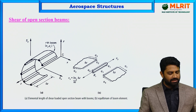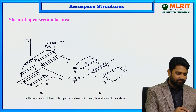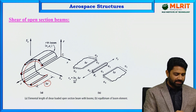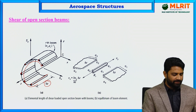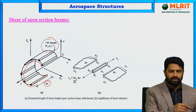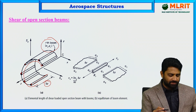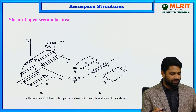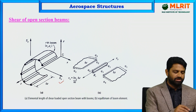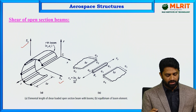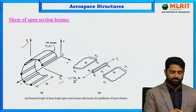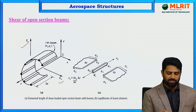Let us consider an open section beam in which stringers are attached to the skin of the beam as shown in the figure. The length is considered as delta z for each boom, and there are many booms — assume R number of booms. There are shear loads acting: Sx is the horizontal shear load and Sy is the vertical shear load. Consider any one boom from this open section beam and represent all the possible forces.